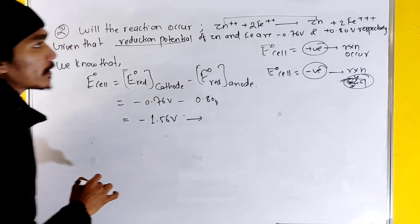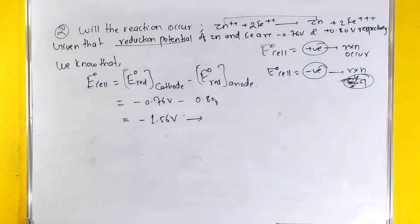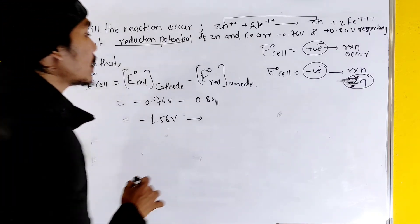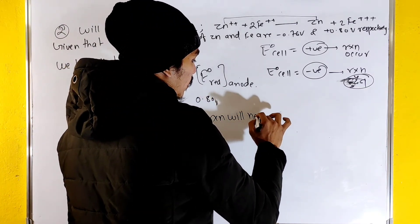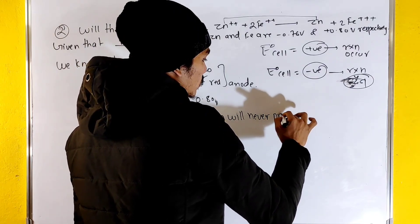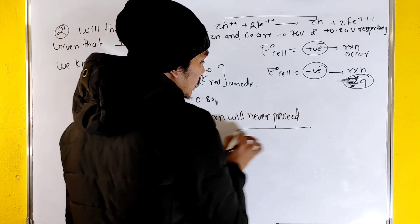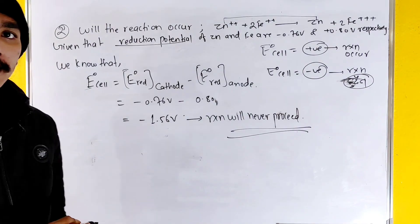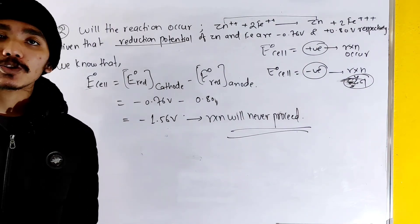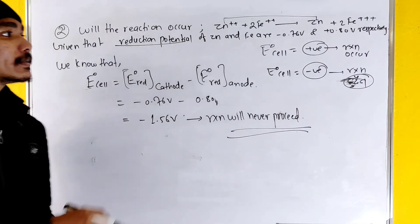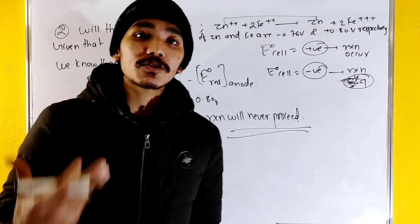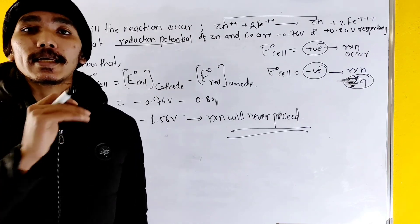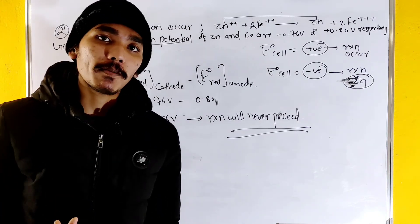Since the E°cell is negative, the cell reaction will never proceed. The reaction is not feasible. This concludes our numerical discussion on electrochemistry. We will discuss more numericals next time.